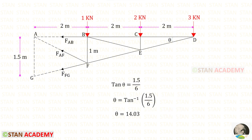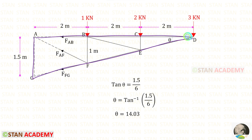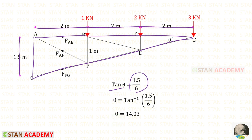We need to find the angle for FFG. Let us call this angle theta. Taking the relevant triangle and applying the tan formula, tan theta equals 1.5 over 6. Solving for theta, we get 14.03°.